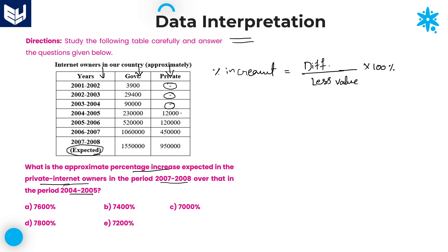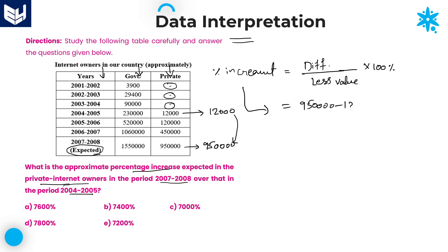In 2004 to 2005, private internet owners are 12,000. Whereas in 2007 to 2008, this value is 9,50,000. Now we need to calculate the percentage increment from this value to this value, which is the difference between these two: 9,50,000 minus 12,000, divided by the previous value of 12,000.